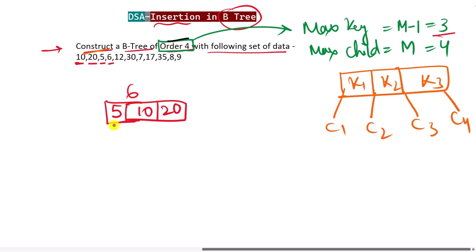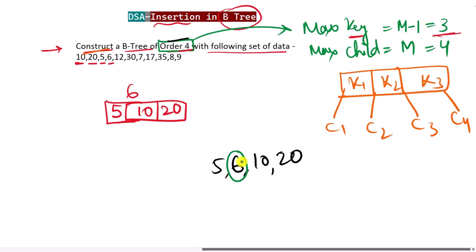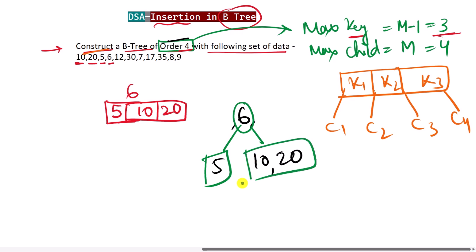Next we insert 6, which goes between 5 and 10. But since the order is 4, the maximum number of keys is 3, so having 5, 6, 10, and 20 means we must split this node. We can choose 6 as the median using left-biasing: 6 is lifted up as the root, with 5 on the left and 10 and 20 on the right.